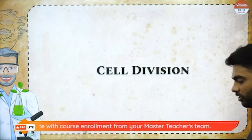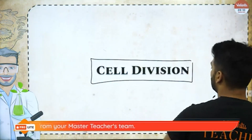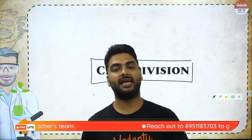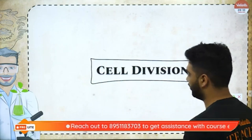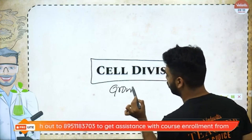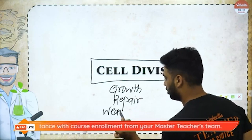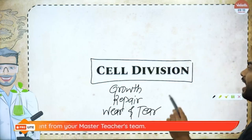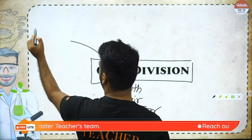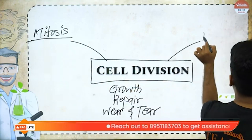Now the most beautiful part of the chapter — cell division. Cell divides for growth, repair, and wear and tear. The reasons for cell division are: growth, repair, and wear and tear. Cell division is of two types: mitosis and meiosis.